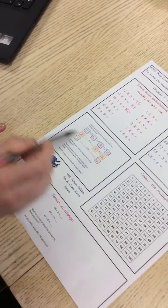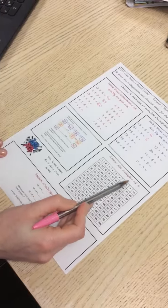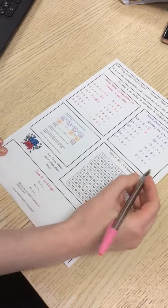This one's quite easy: color the multiples of 8. So by multiples of 8, it just means numbers in the 8 times table.